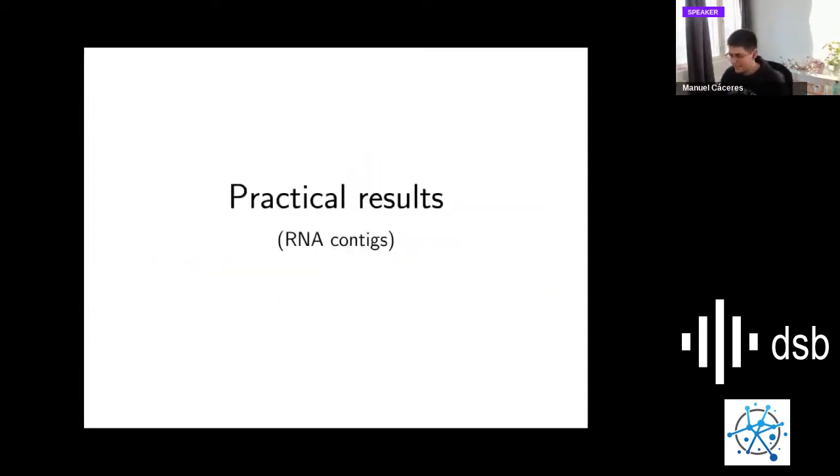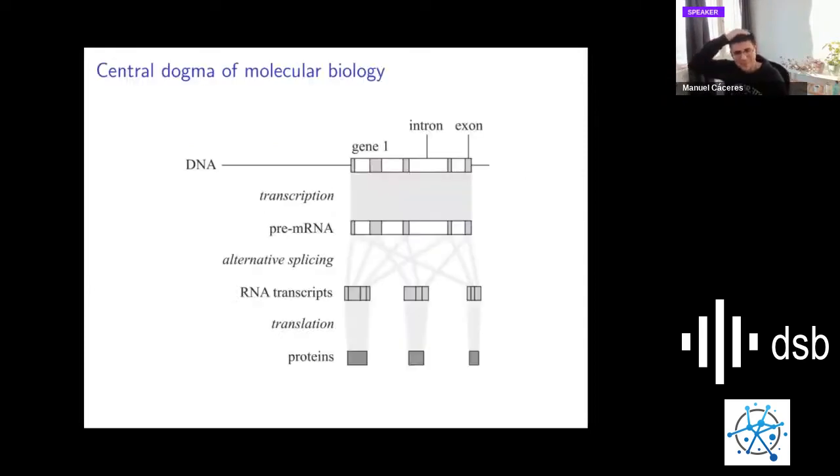These are the theoretical results. In the practical side, we define RNA contigs. I'd like to recall the central dogma of molecular biology. We have the DNA sequence here. We have some sequences of this DNA called introns and some called exons. These exons end up as RNA transcripts, which then become proteins. This process from going to DNA to RNA is called transcription. From going to DNA to the RNA transcript, it happens an event called alternative splicing, where exons of different parts are combined to form different RNA transcripts.